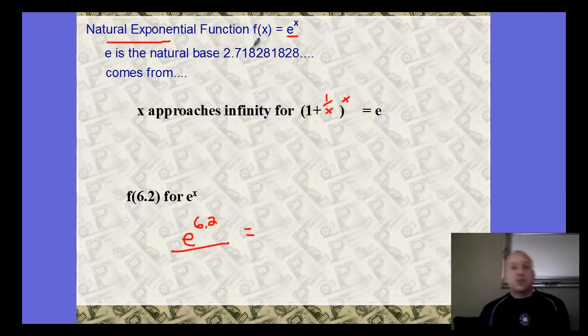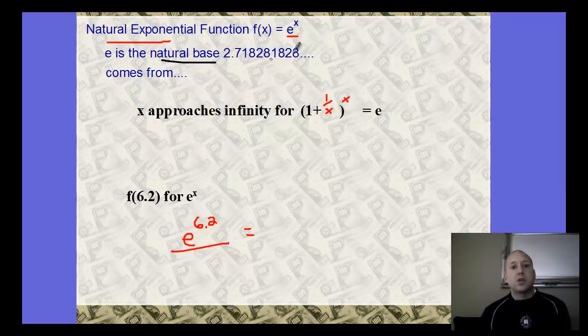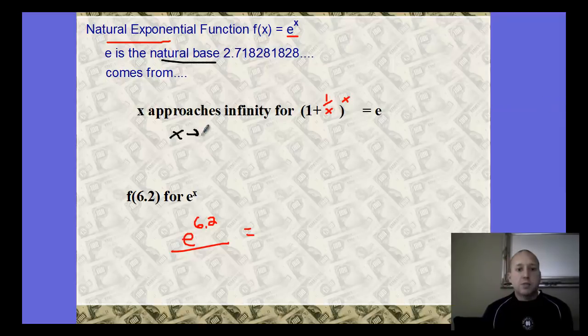The natural exponential function, f(x) equals e to the x, which is used a lot in life. e is the natural base, 2.718 and this number. Where does it come from? First of all, it's kind of considered similar to pi.